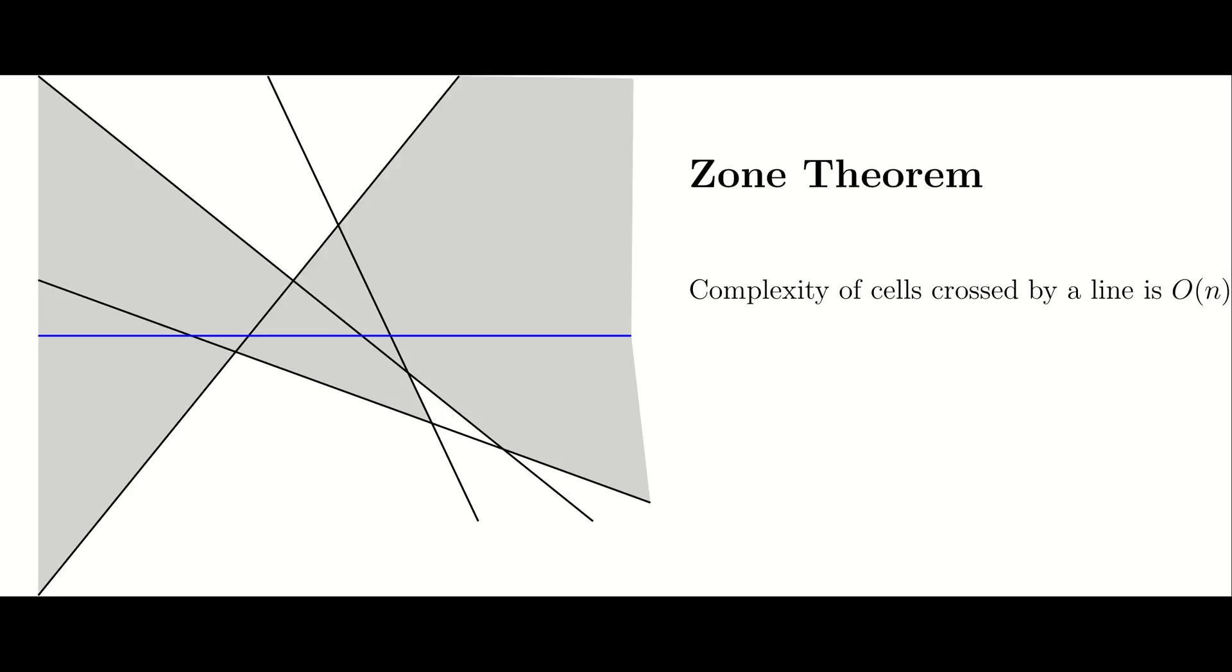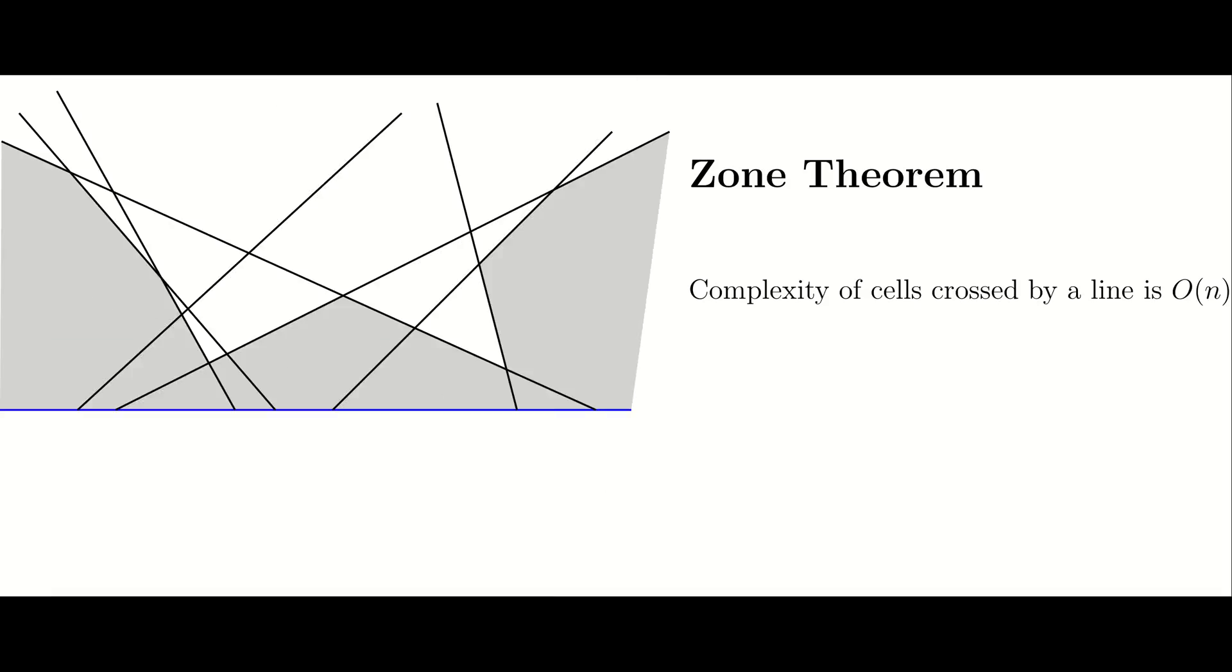We now look at one proof of this zone theorem in two dimensions. Without loss of generality, we can assume that the blue line is horizontal. Furthermore, we can only focus on the part of the picture that is above the blue line. The part of the picture that is below is obviously symmetric.